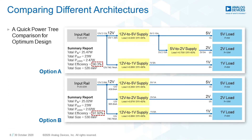Another feature of LT PowerPlanner is the ability to do a quick comparison between different power architectures. In this example, option A uses a 5-volt input converter to generate the 2-volt rail, where option B generates all the power rails using a 12-volt input. You can see that there is a slight difference in overall efficiency and board size.